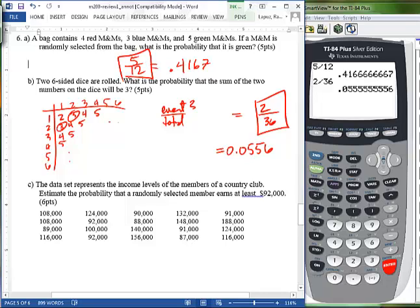Now the last one. Data represents income levels of family members. Estimate the probability that a randomly selected member earns at least $92,000.